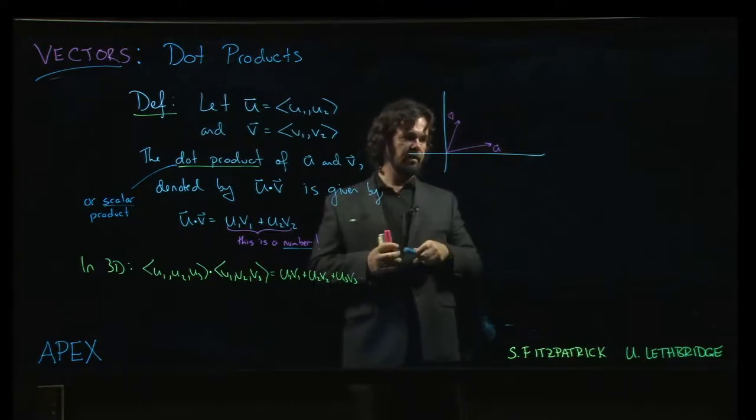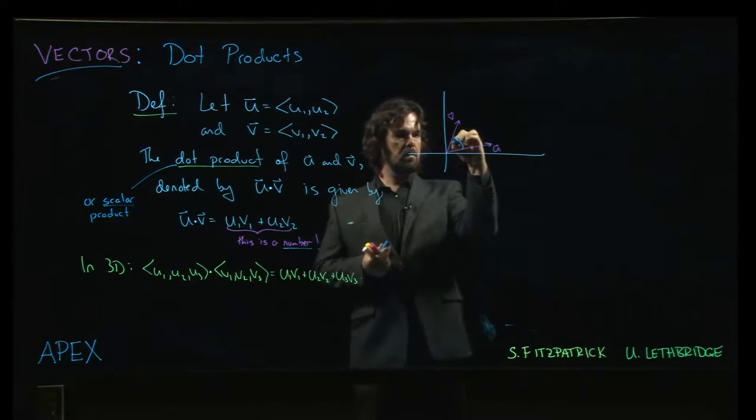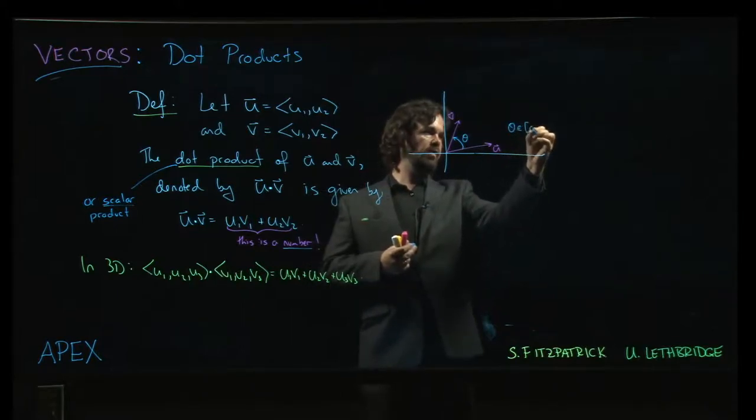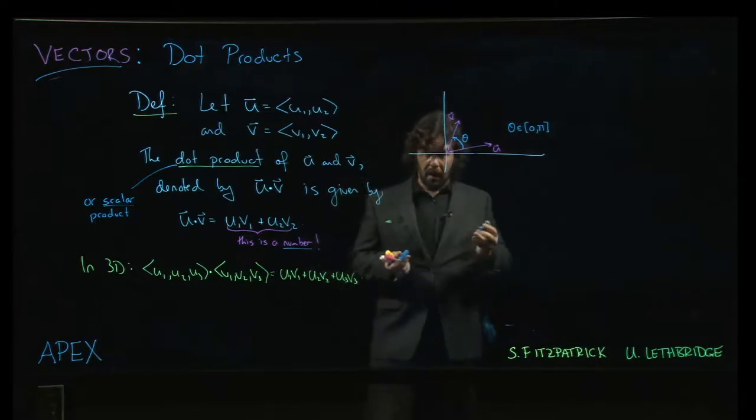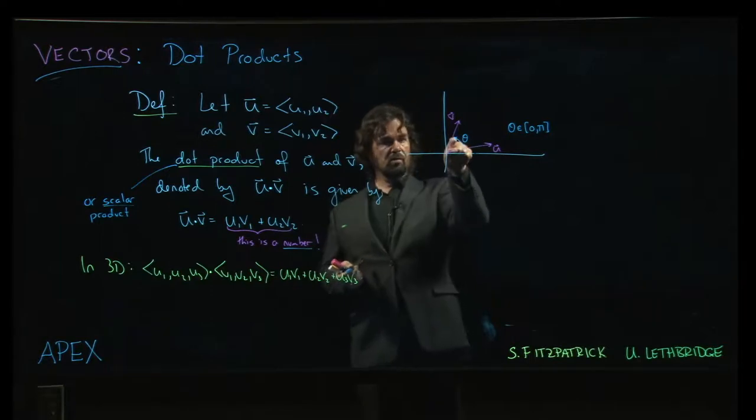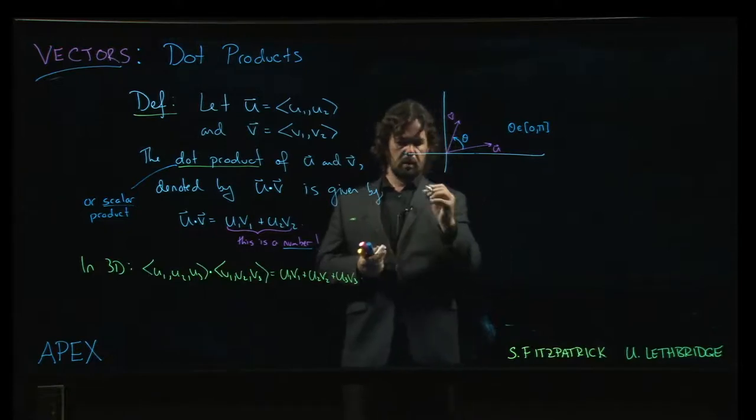Now if you have any two vectors, there's going to be an angle between them. Like so. Theta. Now we'll require here that theta is between zero and pi, just to disambiguate between the other one that goes all the way around.